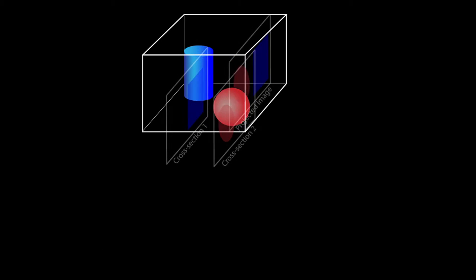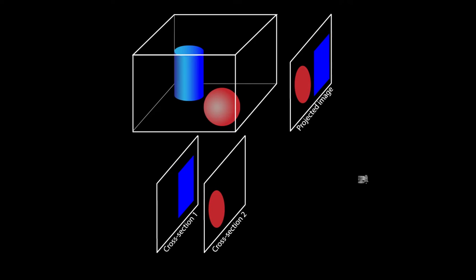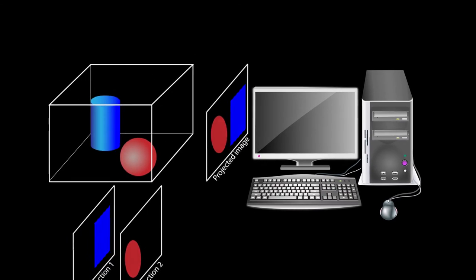Electron tomography works by using an electron beam to produce images of a microscopic object along different orientations. Those images are processed by a computer to visualize the three-dimensional structure of the object.